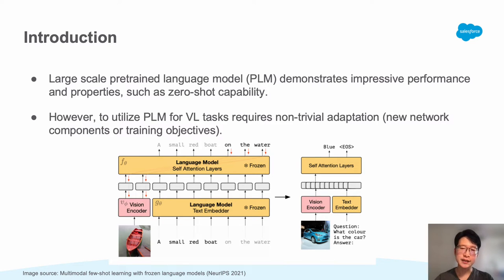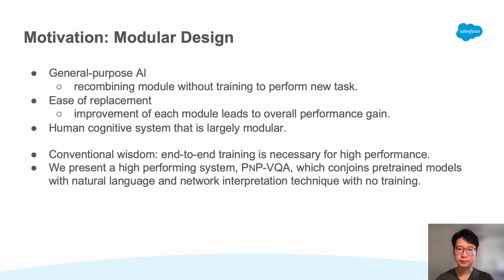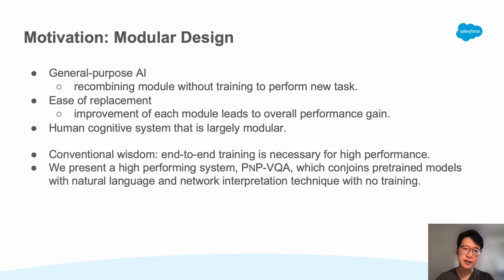Our work aims to address this limitation by proposing a modular framework. In a modular framework, each component is responsible for certain functions. From the perspective of general-purpose and practical AI, it is highly desirable for the system to learn new tasks by recombining modules without any training or architecture change. A modular framework allows us to replace its components without affecting the other modules. The key advantage is that we can leverage improved modules for overall performance gain, allowing the system to keep evolving as modules continue to advance. We are also motivated by a study showing that the human cognitive system is largely modular.